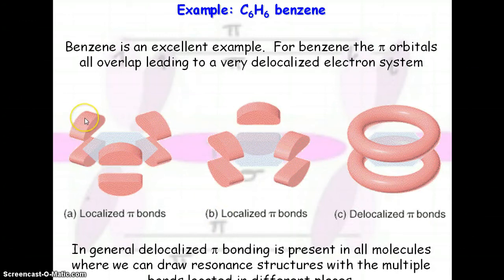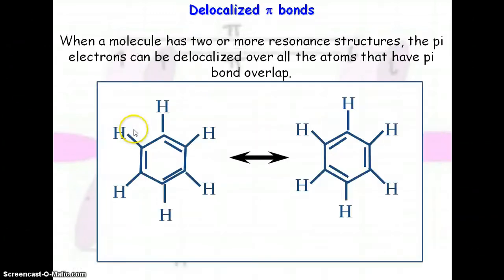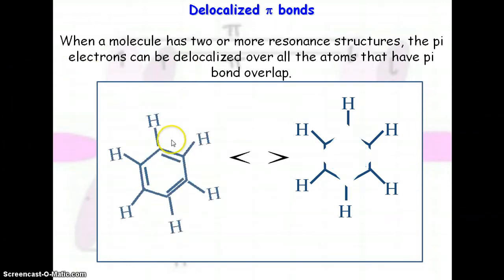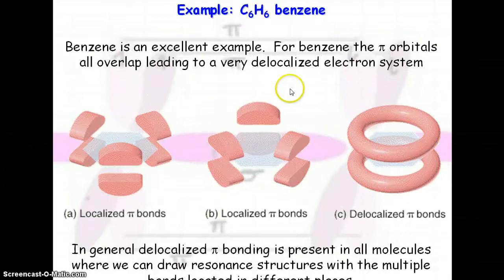What you actually have is you have pi bonding occurring in each of these. So here we're showing the localized pi bonds for the hybridization that occurs. So here's a pi bond, there's a pi bond, and there's a pi bond. So this is assuming the first structure that we had, where we have all of the double bonds in that location. Now, if you change the location of the double bonds for the second resonance structure, you get the pi bonding occurring in a different location.